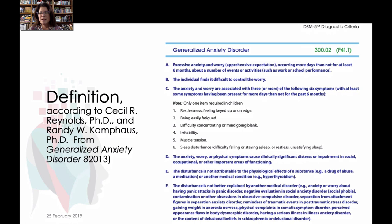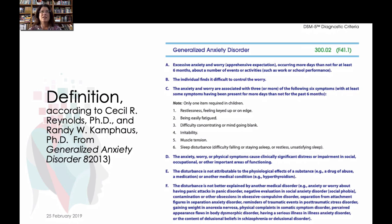For the purposes of this video, we're going to be using Reynolds and Kampfhaus' definition, which comes from their book on generalized anxiety disorder. They use the DSM diagnostic criteria, so this is why we think it's a good starting point. Everybody gets anxious sometimes, but an anxiety disorder is when you have excessive anxiety and worry. This occurs more times than not over at least six months of observation and has roots in various activities — it's not just one thing that causes the anxiety.